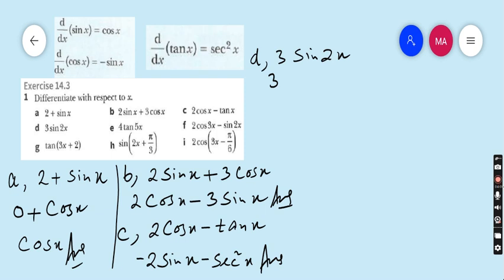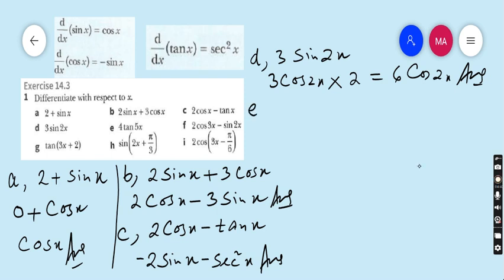But this time don't forget to find the derivative of the angle, because the angle is not just x — here it is 2x. The derivative of x is 1, but the derivative of 2x is 2. So 3 multiplied by cos 2x multiplied by 2 gives 6 cos 2x. This is the final answer of part d.